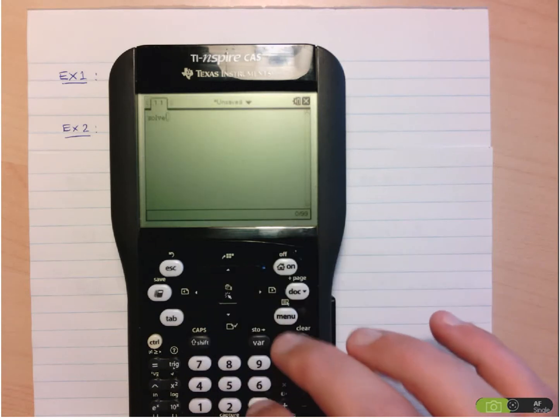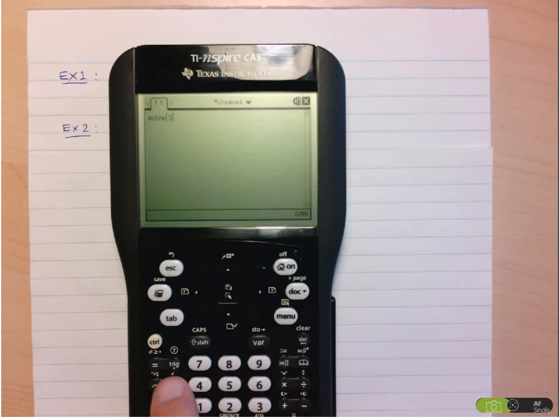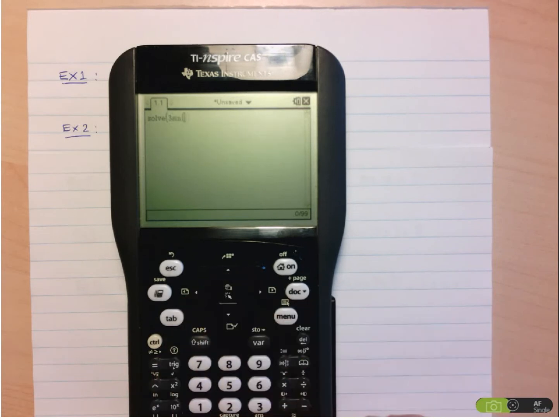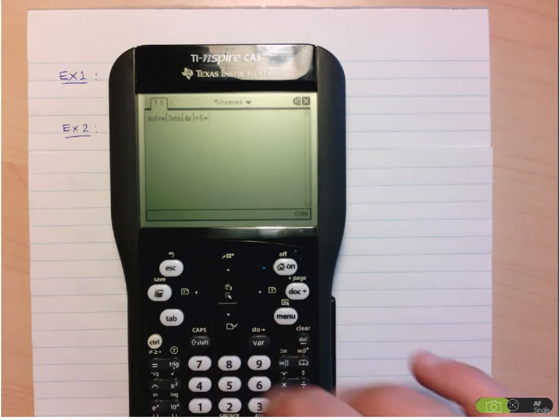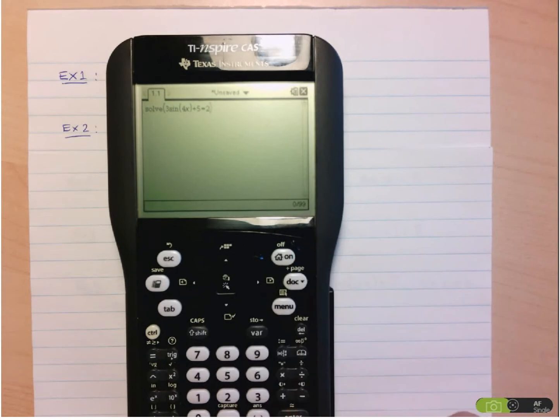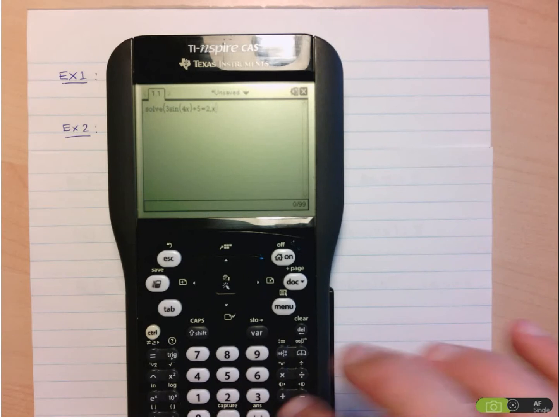So we have 3 sine, don't forget there's a trig button here, just press it and choose whichever trig function you need, in this case sine, 4x, and then plus 5, and we want to know when that is equal to 2. So let's see what happens, oh, let's not forget, we have to tell it that we're solving for x. So we press Enter.